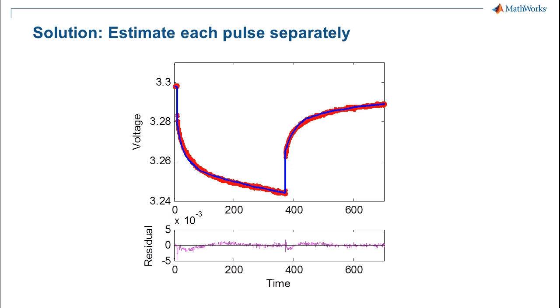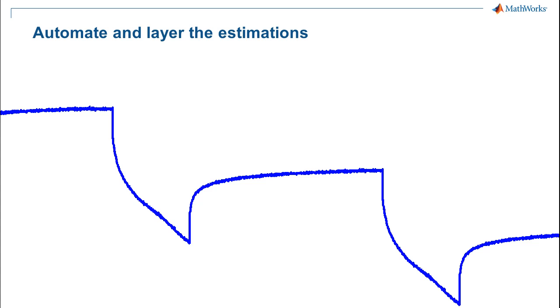Put into simple terms, the solution we used was to estimate parameters for each pulse separately. This greatly reduced the size of the problem by making each optimization have just a few parameters. It was also a much more manageable problem to monitor in case there are problems converging upon an optimal solution. Of course, there was also a lot of data, so it was very desirable to automate all of these estimations.